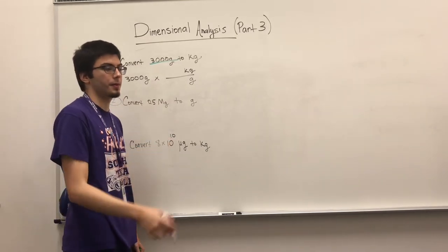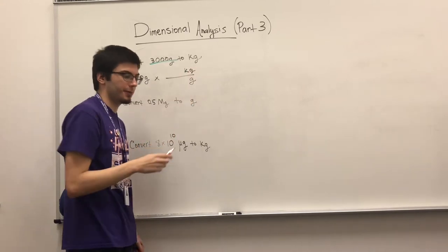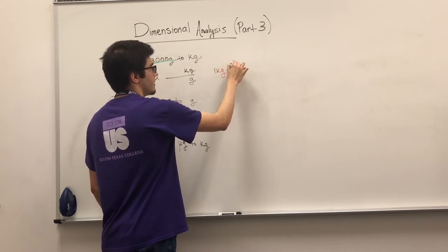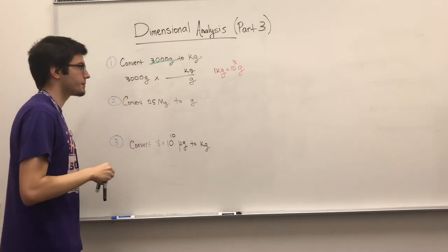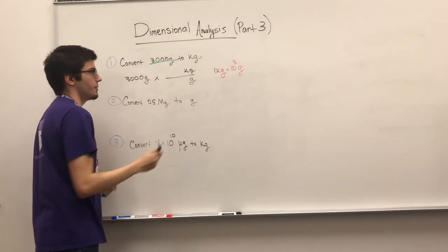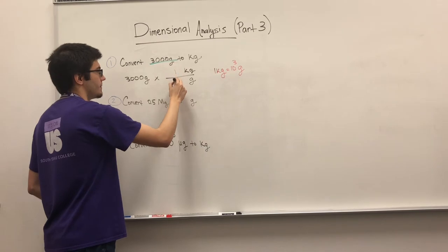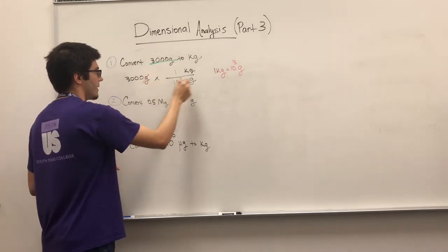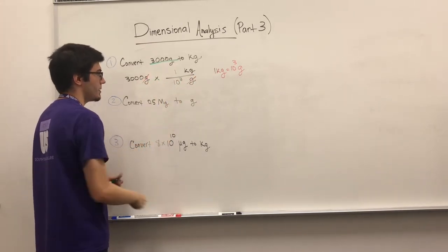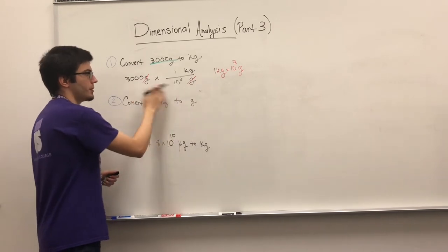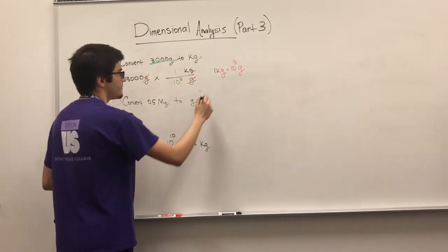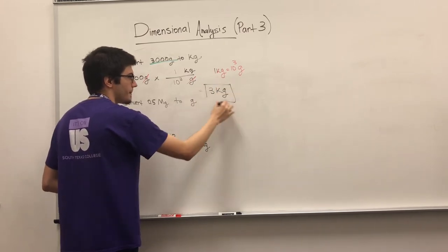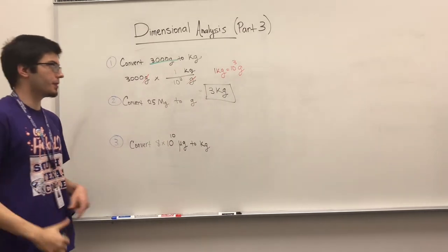We have to remember the conversion from grams to kilograms. Kilograms is big — one kilogram is 10 to the 3 grams. You write that relationship in, the grams cancel, and you're left with kilograms. Put the numbers in your calculator and you get 3 kilograms. That's number one — a one-step conversion from the base to something big.